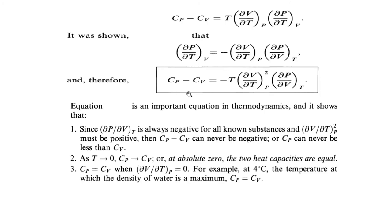That is, the specific heat at constant pressure is always greater than the specific heat at constant volume. As T tends to zero, Cp tends to Cv; at absolute zero, the two heat capacities are equal. That is, if T equals zero, the right-hand side becomes zero, so specific heat at constant pressure equals specific heat at constant volume. For example, at 4 degrees Celsius, the temperature at which the density of water is a maximum, Cp is equal to Cv.